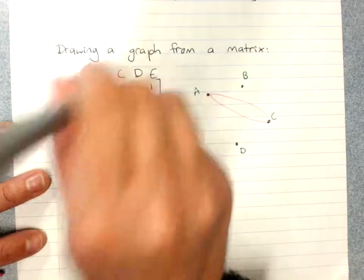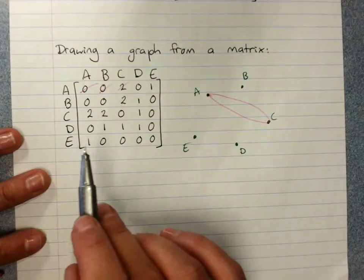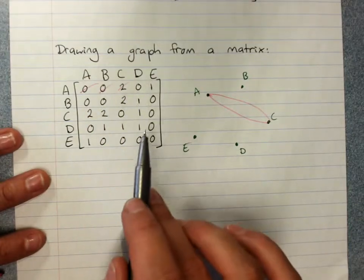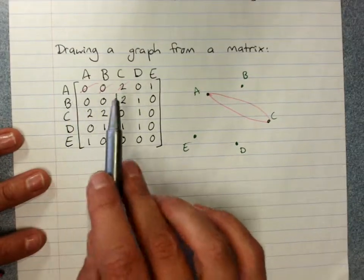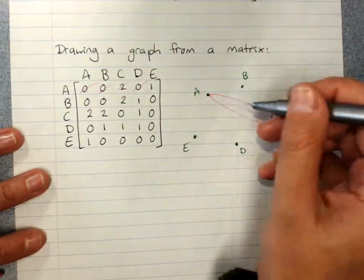If you're doing this, it's a good idea to cross them off as you go, especially in a test, so that you don't get mixed up. A to D, nope. A to E, there's one.